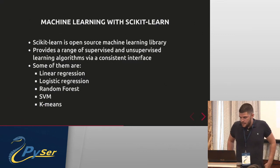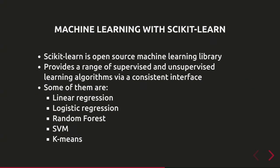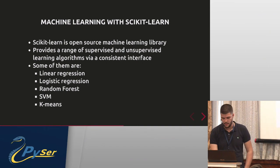The next step is machine learning. Scikit-learn is the most popular machine learning library for Python. It provides a wide range of supervised and unsupervised algorithms with a consistent interface, including linear regression, logistic regression, random forest, SVM, and k-means — basically anything you will ever need. It also supports simple neural networks, but for deep learning you should use TensorFlow and Keras.